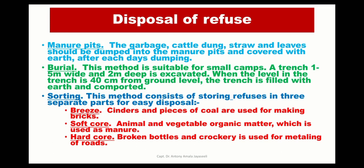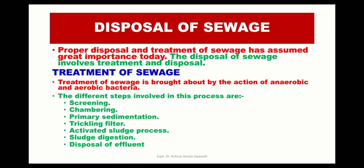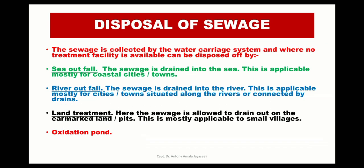Sewage treatment is of utmost importance. This treatment is mainly brought about by the action of anaerobic and aerobic bacteria. The process involves screening, chambering, primary sedimentation where waste is removed from water, trickling filter, activated sludge process, and disposal of the effluent. In some areas, sewage is drained into the sea or river, or it is treated and reused. Sewage water can also be used in an oxidation pond, where bacterial biodegradation is allowed to occur and the water is reused.